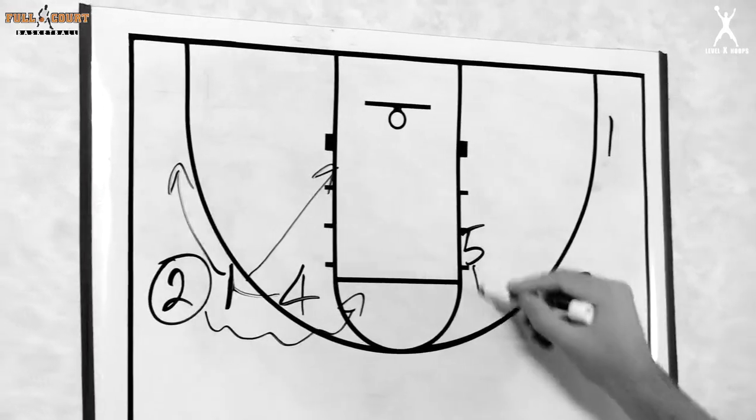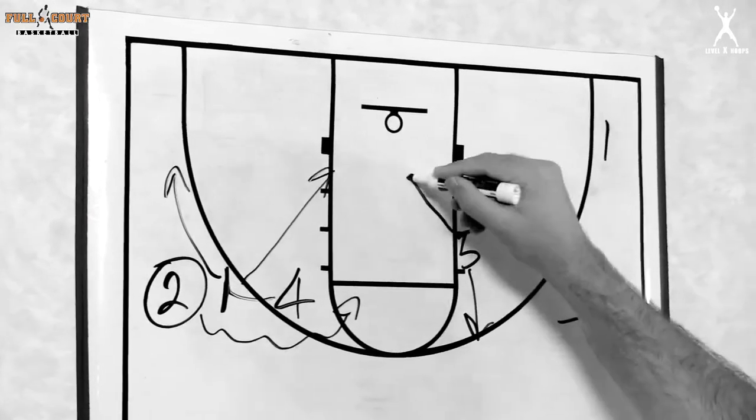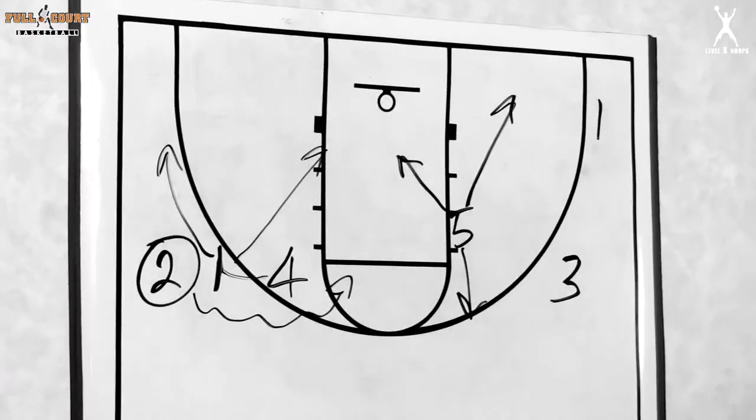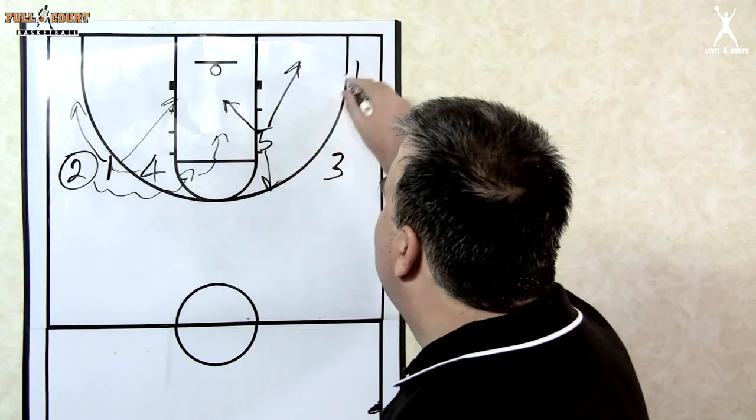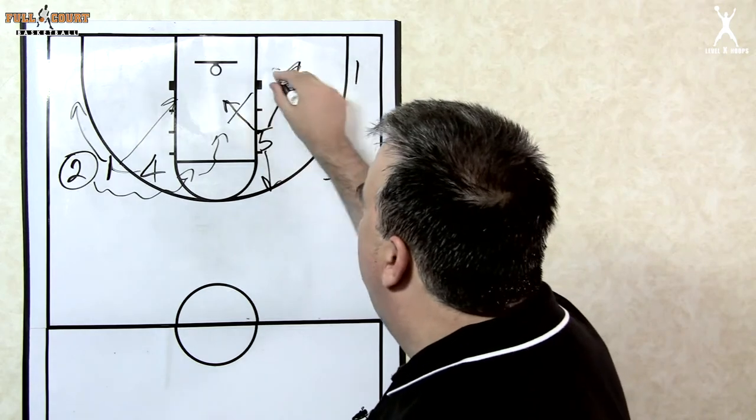Five here can either lift up and come outside, can duck into the lane or step away towards the short corner area, giving room for two for the penetration to either kick out, or if five's defender steps up, two can just lob it up or make a bounce pass to five for a layup.